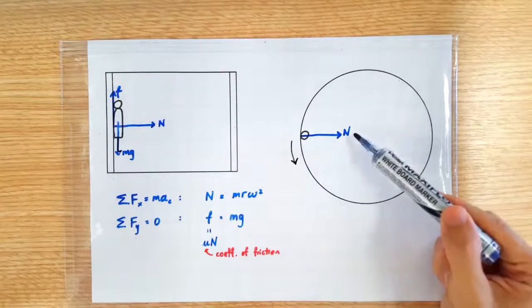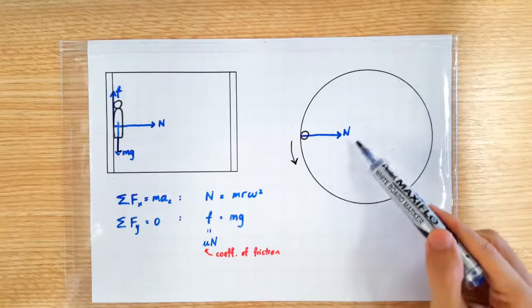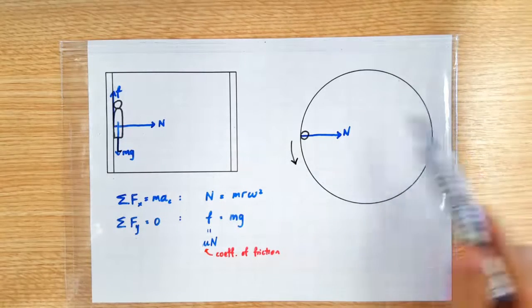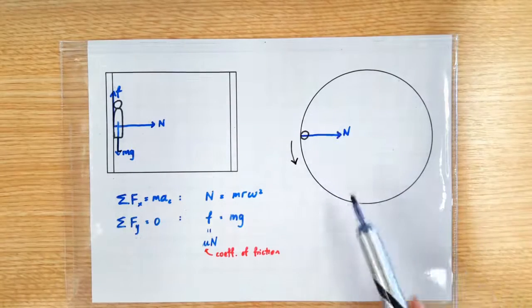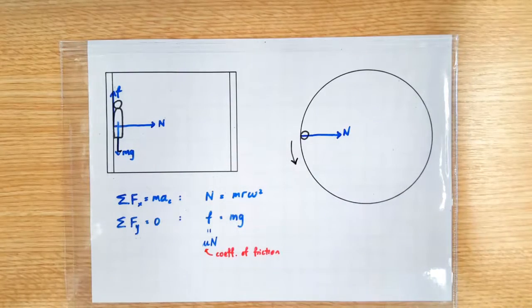Some students will ask, why should the normal contact force increase as the drum spins faster? They ask, how come the drum is so smart that it knows what normal contact force to exert on the person?